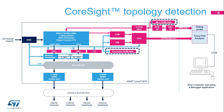The ROM tables contain pointers to the base addresses of each debug component visible from the core. They are used by some debug tools to automatically detect the topology of the CoreSight infrastructure in the target. There are two ROM tables in the CPU subsystem. The MCU ROM table is pointed to by the base register in the AHBAP, and it contains the base address pointer for the processor ROM table and for the TPIU registers.